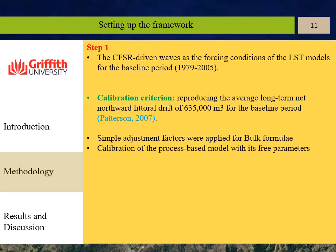The criterion for calibration was reproducing the average long-term net northward littoral drift of 635,000 cubic meters per year for the baseline period. We used simple adjustment factors for the bulk transport formulas, and for the process-based model its three parameters were tuned.